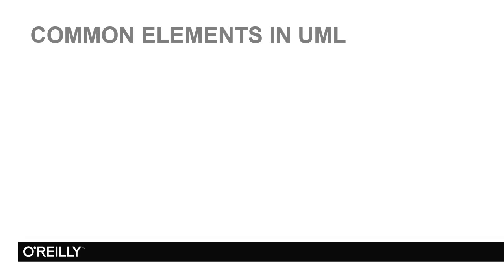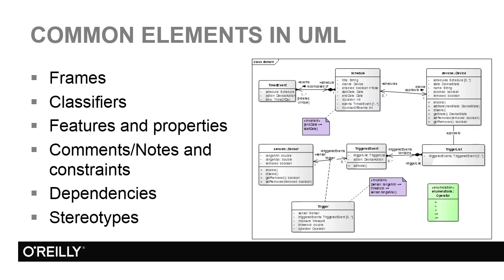In this movie I'm going to give you a brief introduction to some of the common features that you'll find in UML diagrams. I'll cover frames which are used to contain diagrams, classifiers which is a term used to cover quite a lot of UML elements that describe a set of objects of some sort, features and properties of elements in the model, comments or notes and constraints which are often shown as notes, dependencies which are a kind of relationship, and stereotypes which allow elements to be extended for a specific modelling purpose.